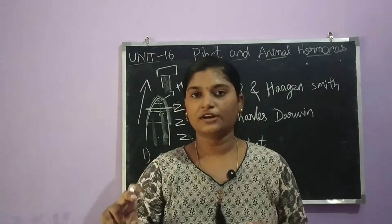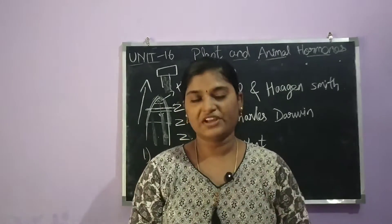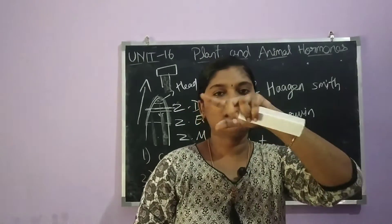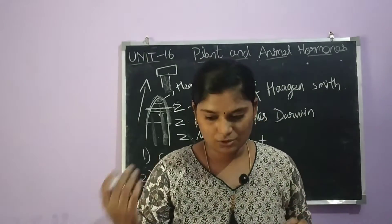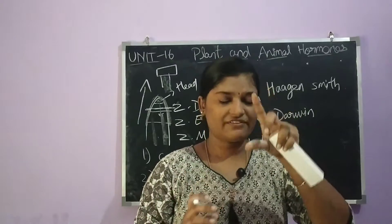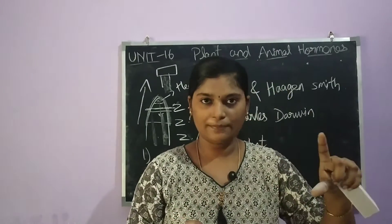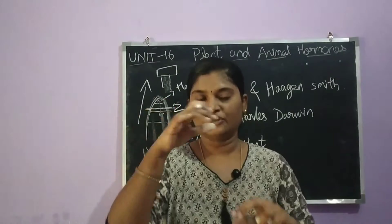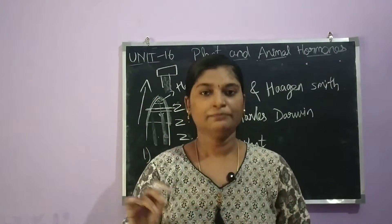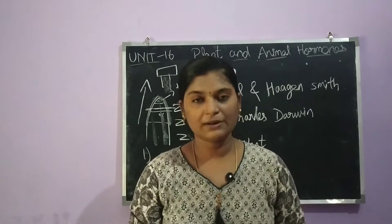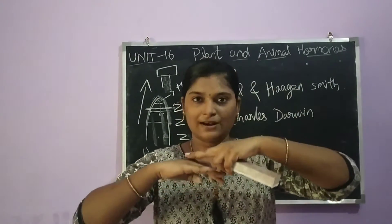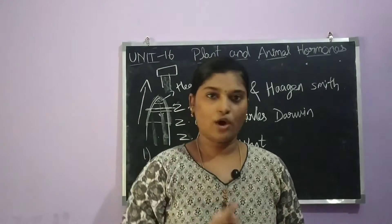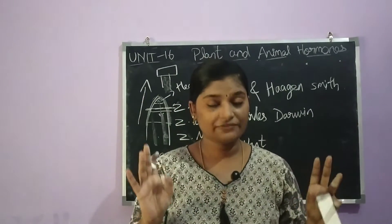In the third experiment: plant A will be a full plant with the tip intact. Plant B will have the tip cut and an agar block placed on it. Then, if you take the agar block with the absorbed chemical from the tip and place it on the cut plant, the plant will grow. This is the Went experiment.